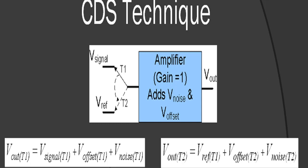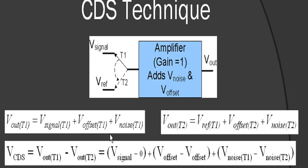To obtain the correlated double sample signal, the V-out at T1 and T2 are subtracted. The offset and the signal remain constant, and thus the offset gets cancelled and the signal passes through unaffected. The low frequency noise is not constant and thus shows up as a difference between the noise samples at T1 and T2.